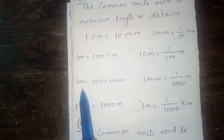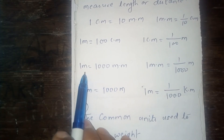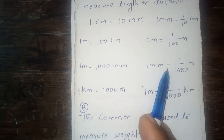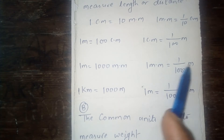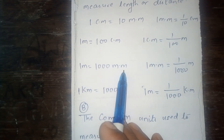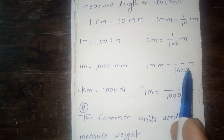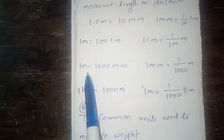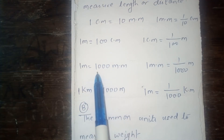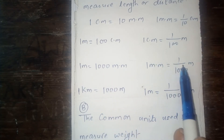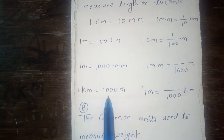Again, 1 meter is equal to 1000 millimeters, and 1 millimeter is equal to 1 upon 1000 meter. When meter is converted to millimeter, then multiply by 1000, and when millimeter is converted to meter, then divide by 1000. Again, 1 kilometer is equal to 1000 meters, and 1 meter is equal to 1 upon 1000 kilometer.